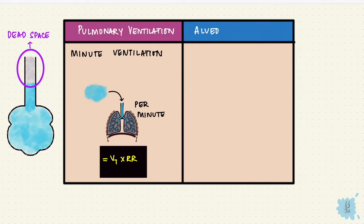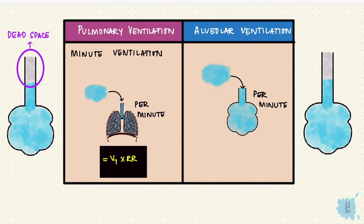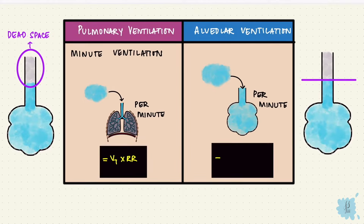The alveolar ventilation rate is the rate at which air reaches the alveoli per minute, so the dead space has to be removed. It's the tidal volume minus the dead space volume, multiplied by the respiratory rate.